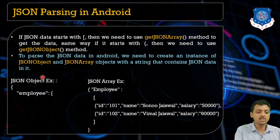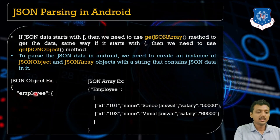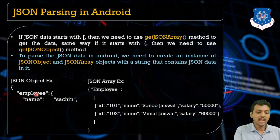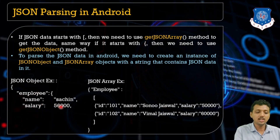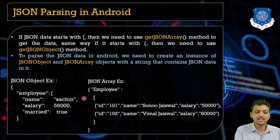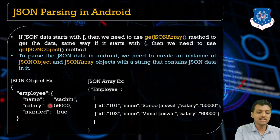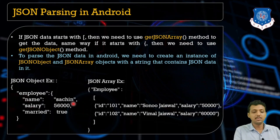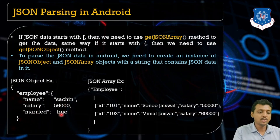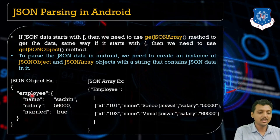For example, if you want to define a JSON object, you start with a curly bracket. The object name is 'employee'. The keys and values inside are: key 'name' with value 'Sachin', key 'salary' with value 6000, and key 'married' with value true. So remember, 'employee' here is the JSON object.